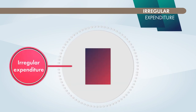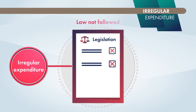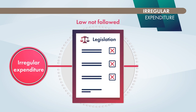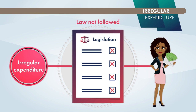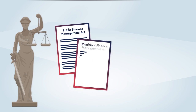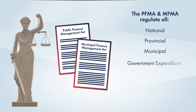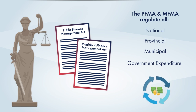Let's start with irregular expenditure. This simply refers to instances where the requirements of legislation were not followed in the process leading up to any payment. The Public Finance Management Act and the Municipal Finance Management Act regulate all national, provincial and municipal government expenditure respectively, and clearly state the procurement and payment process to be complied with.